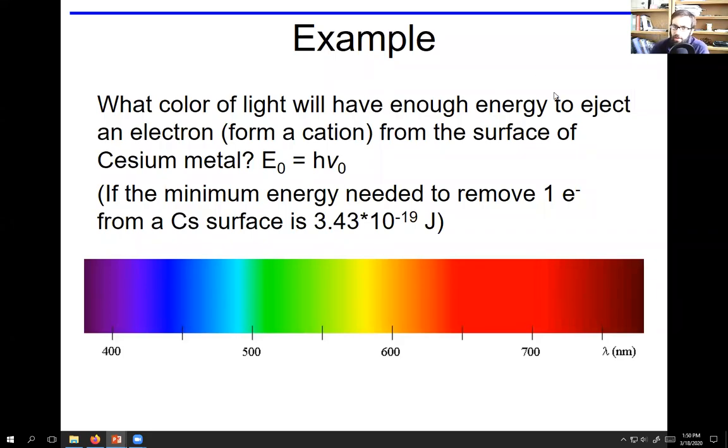All right, so in this video we're going to go over a problem with the photoelectric effect. The problem says what color of light will have enough energy to eject an electron, forming a cation, from the surface of cesium metal?